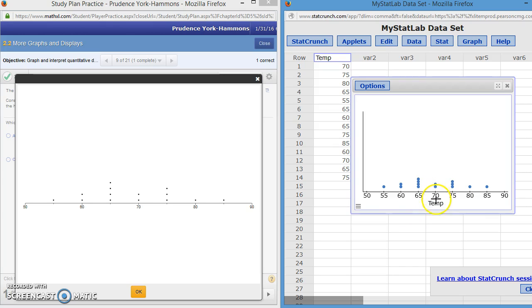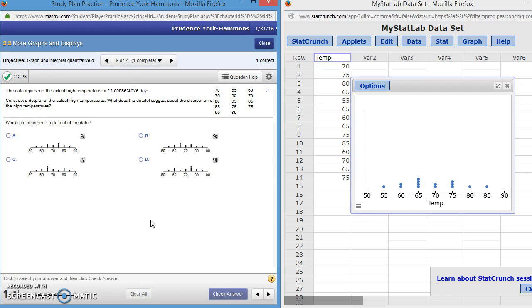And at 70, you can see there are two. Matches up. At 75, there's three, just like over here. At 80, there's one. And at 85, there's one. It looks like this graph, graph B, matches up with the one that we got from StatCrunch. So let's check our answer and see. Great. It's fantastic. We got it correct.